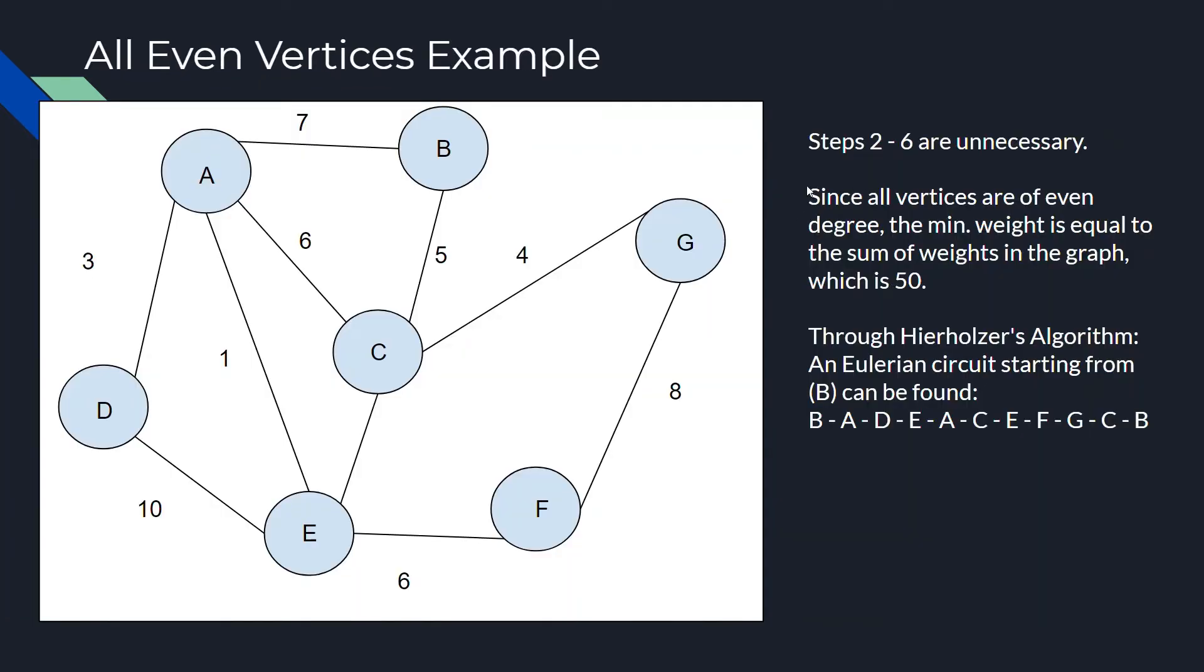So, since the minimum weight is just simply adding everything together, we can get seven plus three, ten, plus ten, twenty, plus six, twenty-six, plus eight, thirty-four, plus four, thirty-eight, plus five, forty-three, plus six, forty-nine, and finally plus one, that's fifty. So, we know the minimum sum of the weights of travel for this graph is fifty.